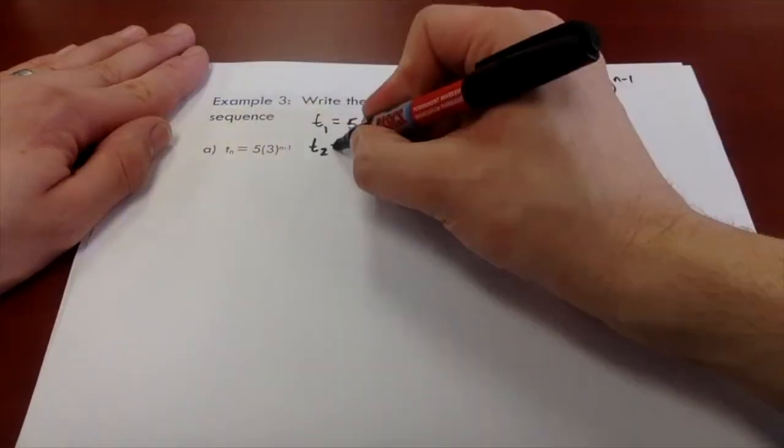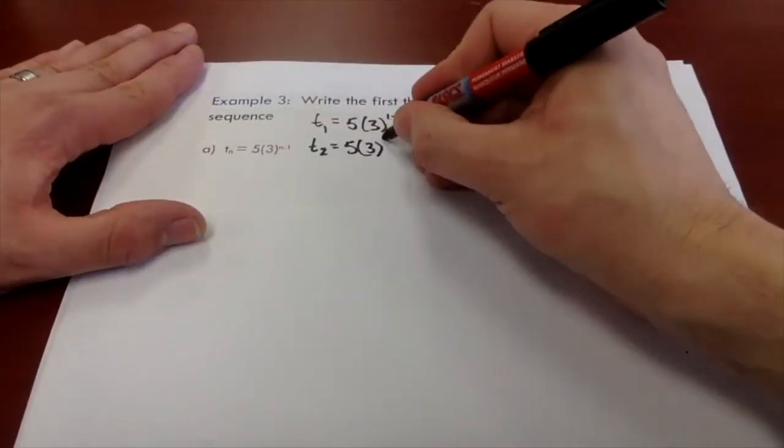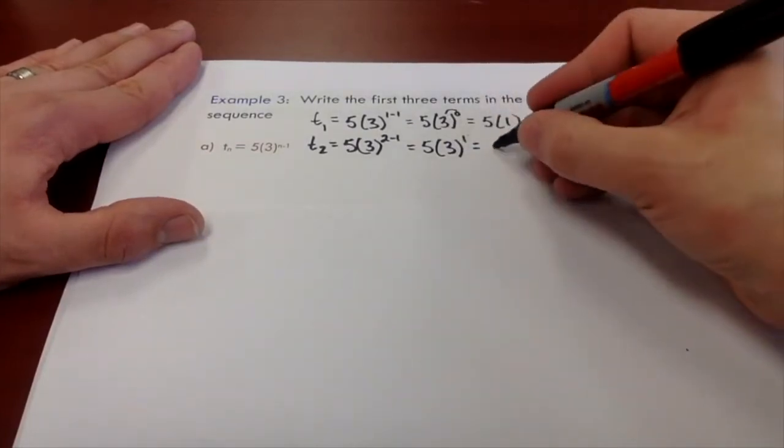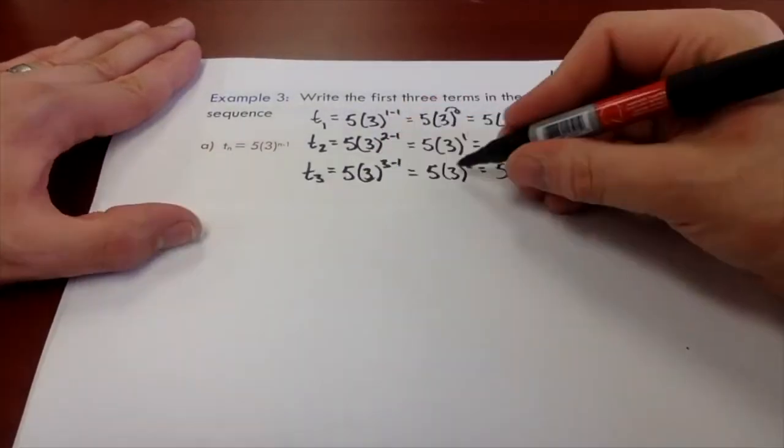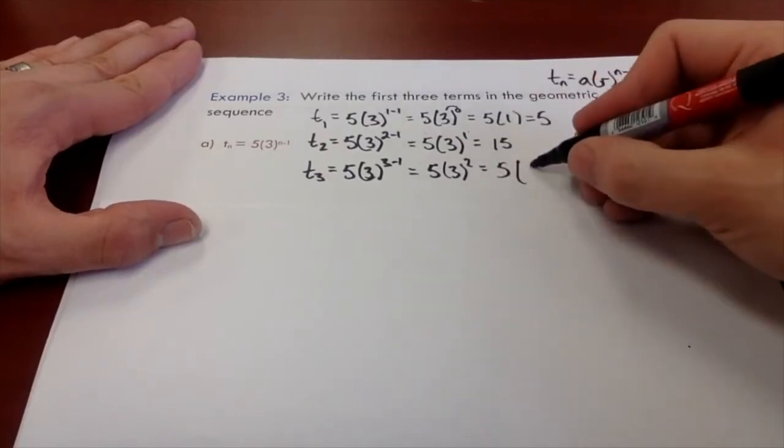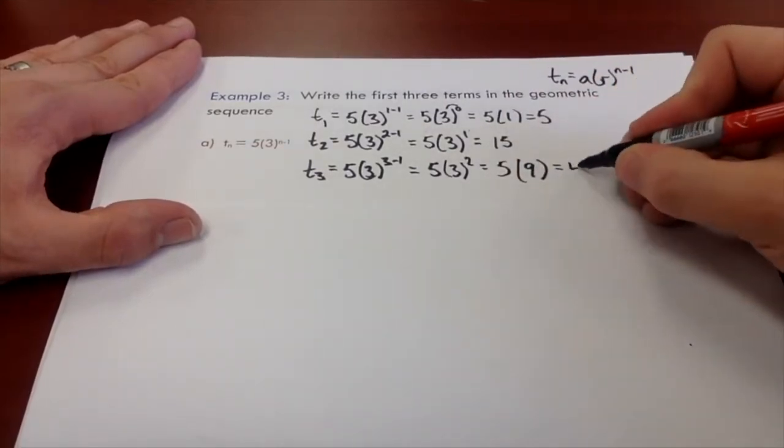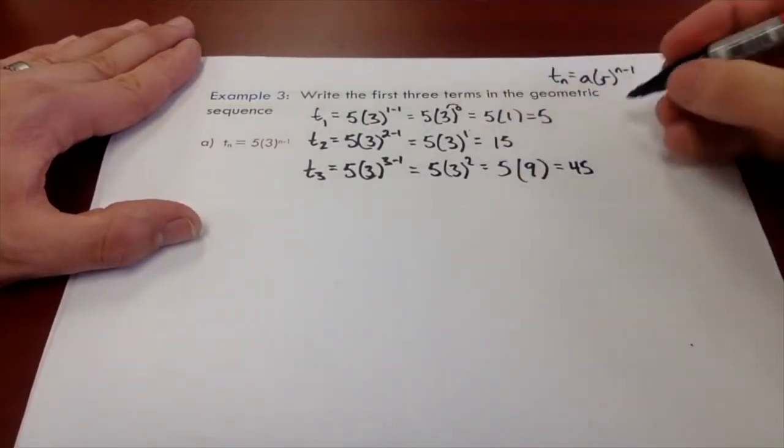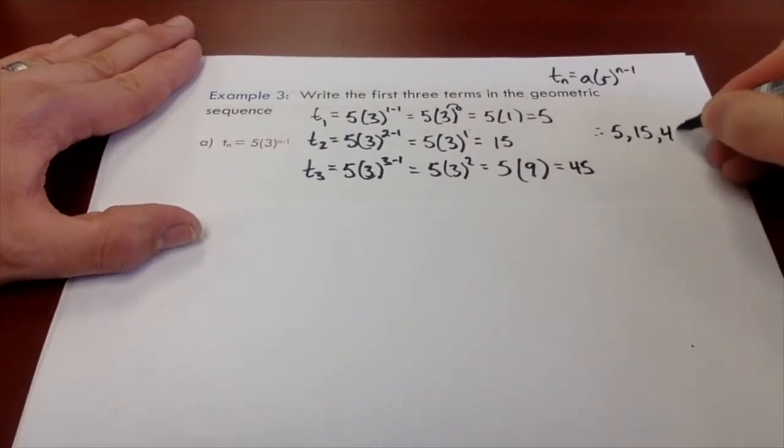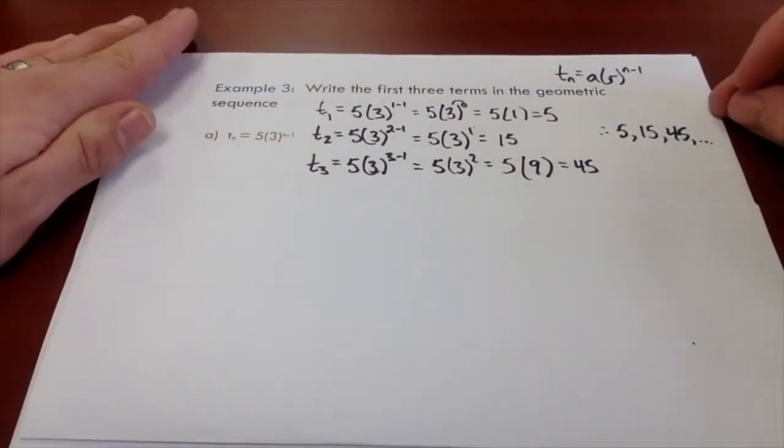Second term, same thing. We're going to sub in two, three to the power of one is three. We're going to multiply by five to get 15. We're just going to sub in three here. What we have here is five times three squared, which is nine. Five times nine is 45. So for our first three terms, we would say therefore we have five, 15, 45. You've got yourself a geometric sequence there.